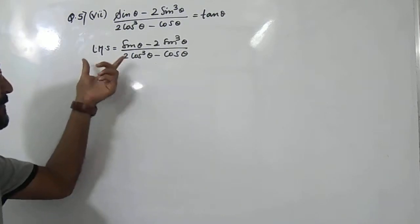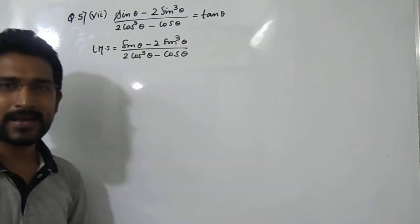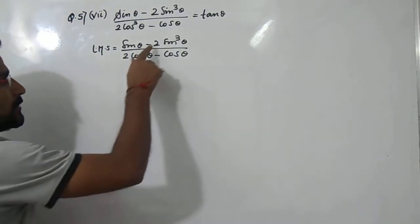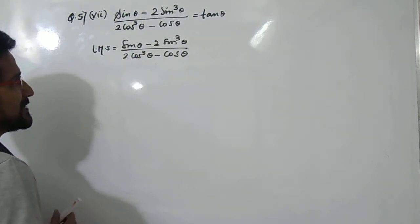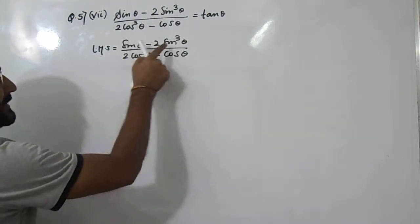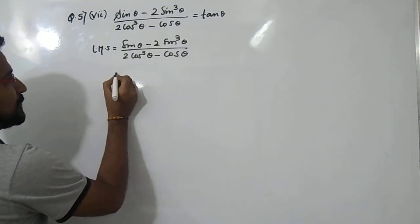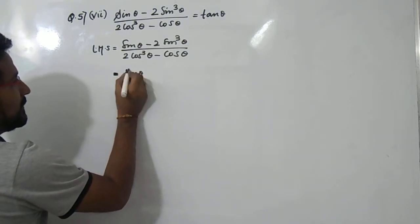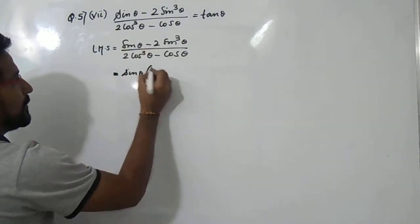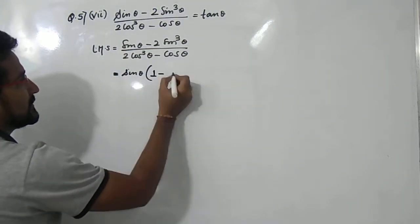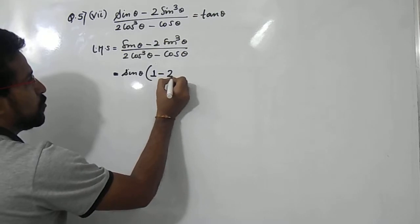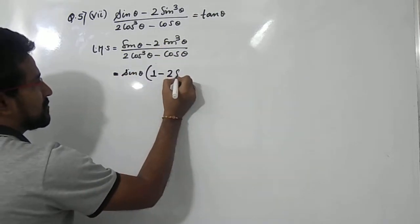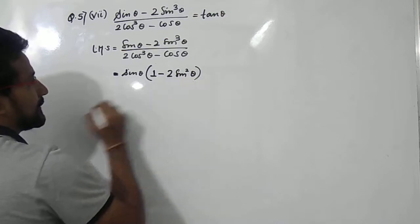So we'll simplify the LHS. It is sin θ minus 2 sin³θ. If you see, sin θ is common in both terms, so we'll take sin θ common. It will be sin θ times (1 minus 2 sin²θ), since we have taken one sin θ outside, the remaining factor is 1 minus 2 sin²θ.